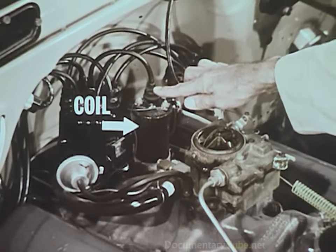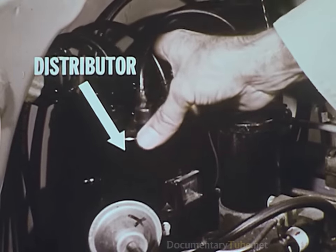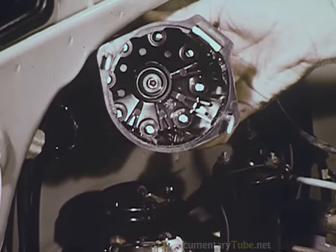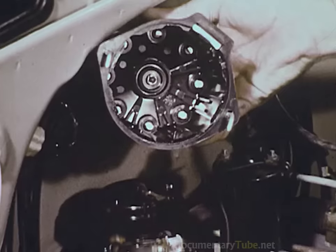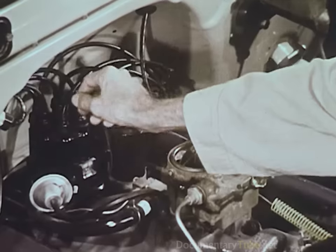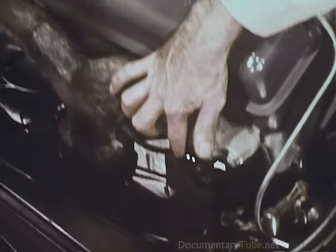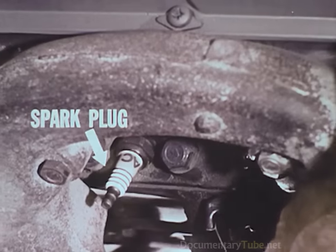Together at the rear of the engine are the coil, the distributor cap containing the contacts swept by the rotor, the rotor itself, and the points, which sometimes need adjustments. And finally, in the cylinder heads, the spark plugs.